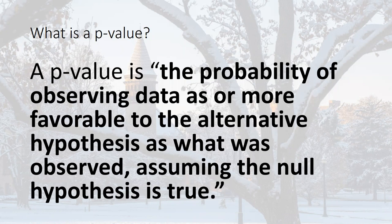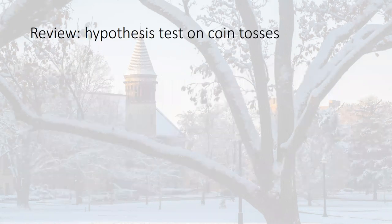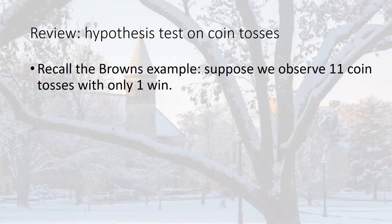Make sure you know this definition and never forget it, because if you're going to do anything with statistics or data science you need to know what a p-value is. Let's talk about what a p-value is in the context of an example we've already seen — the Cleveland Browns had 11 coin tosses, and let's suppose for the sake of this example that they actually did win one.